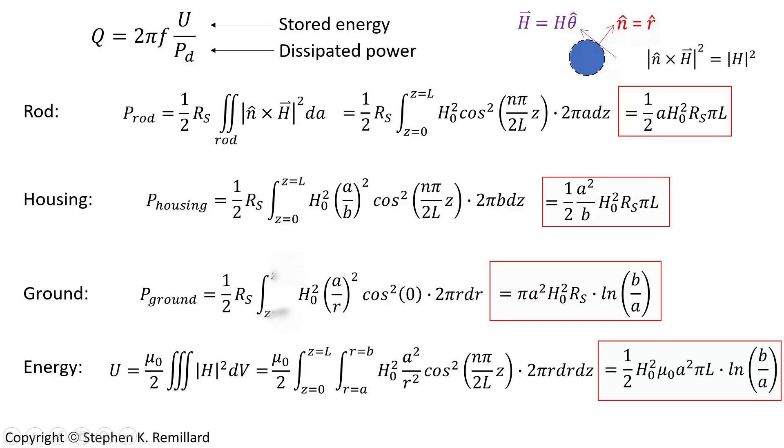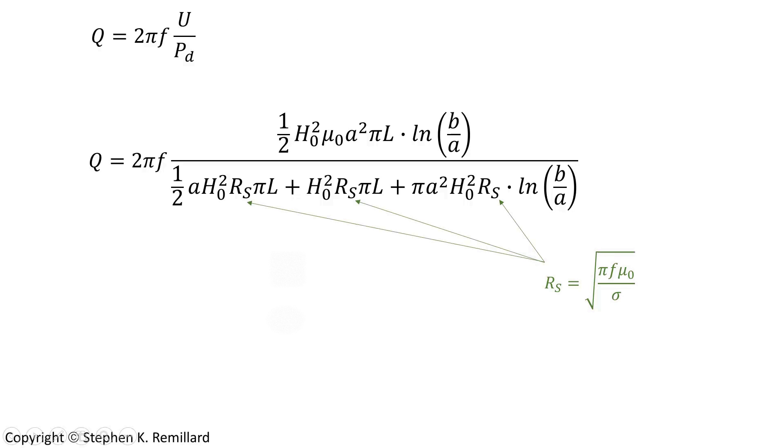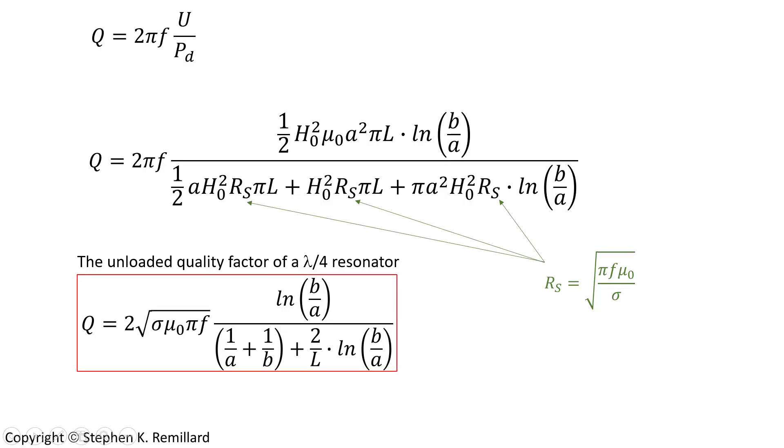Put these four expressions into the definition of Q. The energy is on top, and these three dissipated powers are on bottom, and you have 2 pi f outside. Replacing the Rs's with that expression for Rs, simplify everything down to this.